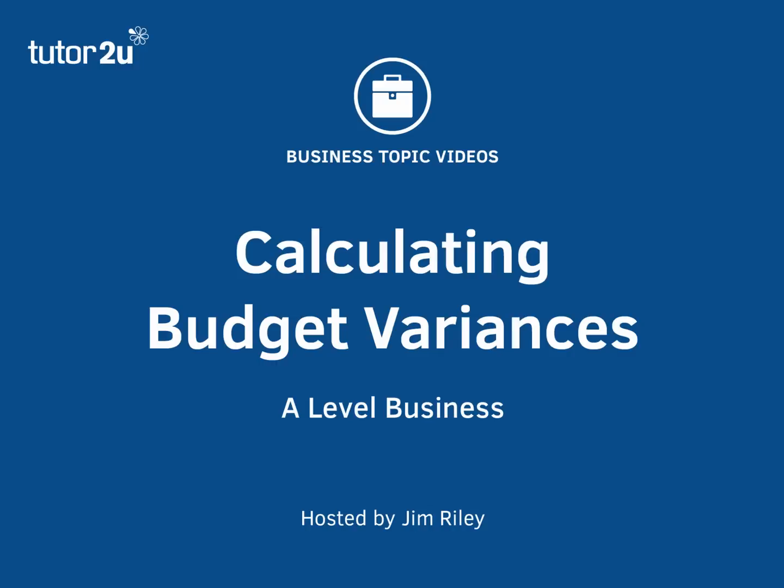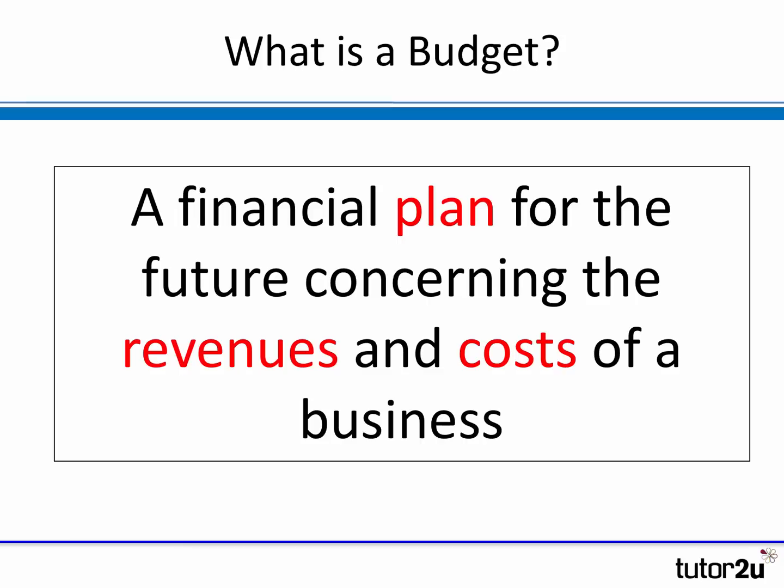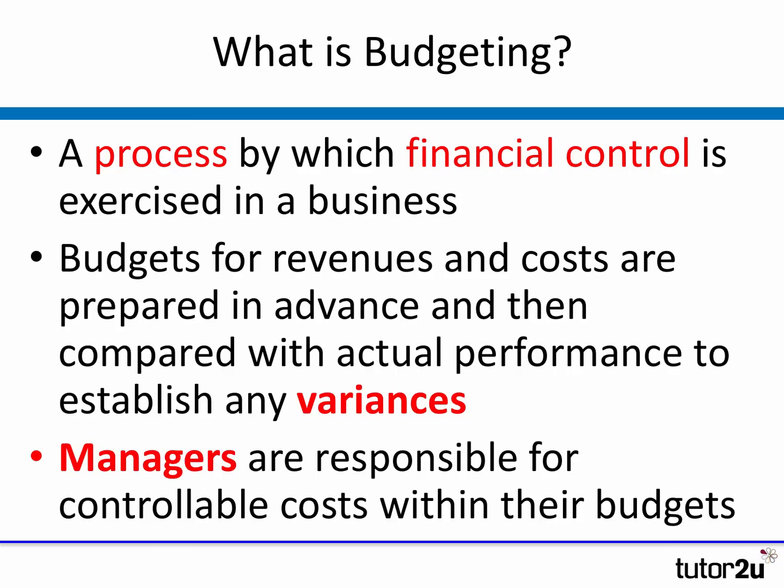In this business topic video we'll introduce the concept of budget variances — how they're calculated and how they happen. Variances are all part of what's known as budgeting. A budget is a financial plan put together by the management of a business; it looks forward and considers the likely revenues, costs, and therefore profit. Budgeting is an important part of the financial control of a business.